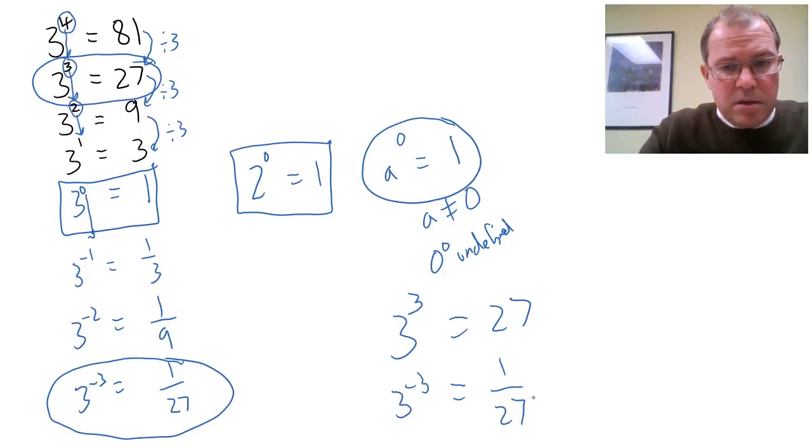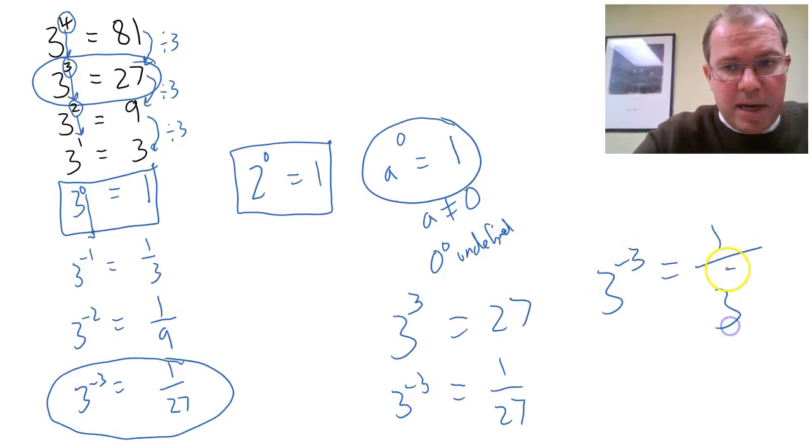In other words, 3 to the power of minus 3 is just the reciprocal of 3 to the power of 3. If you don't know what the word reciprocal means, don't worry—it just means 1 divided by it. So 3 to the power of minus 3 is the reciprocal, 1 divided by 3 to the power of 3, which is 1 over 27.